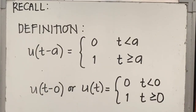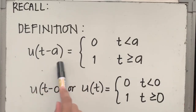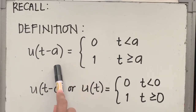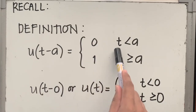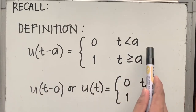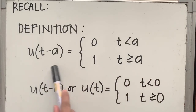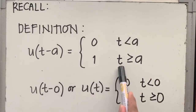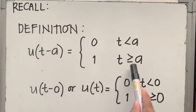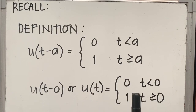Let us first recall the definition of the unit step function. The unit step function is denoted by u of t minus a. This means that the function is 0 when t is less than a, and the function is equal to 1 when t is greater than or equal to a.